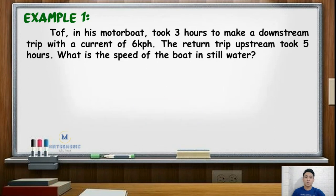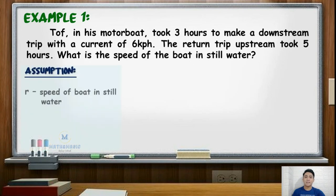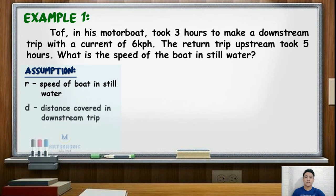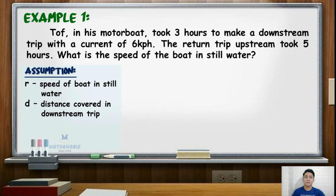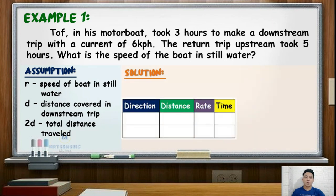In the problem, we will first define the variables. We let R be the speed of the boat in still water, and D be the distance covered in making the downstream trip. Next, we will construct a table. Column 1 will be for the direction — downstream and upstream. Column 2 will be for the distance traveled. The third column will be for the rate, and the last column will be for the time.